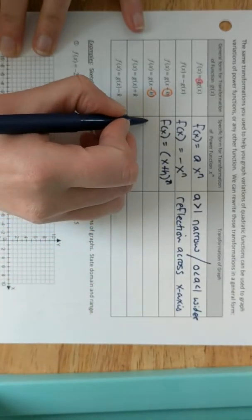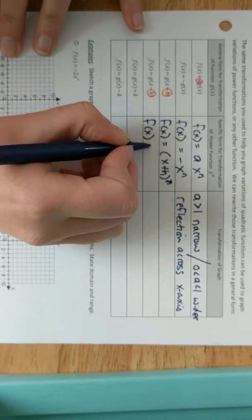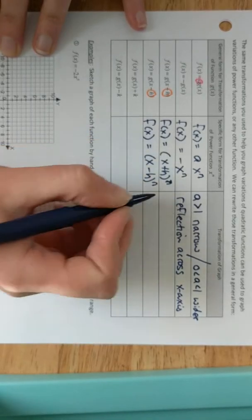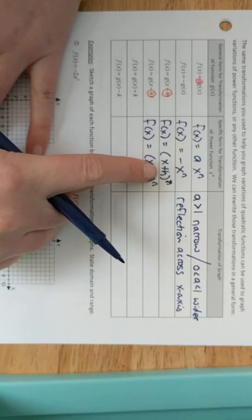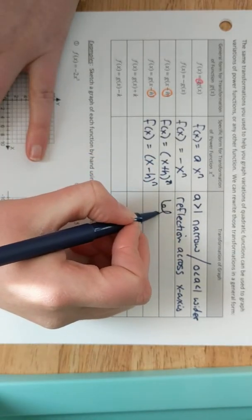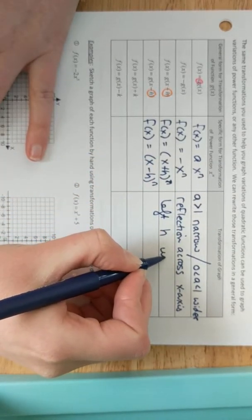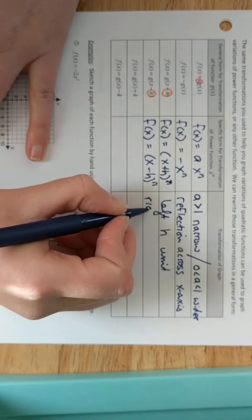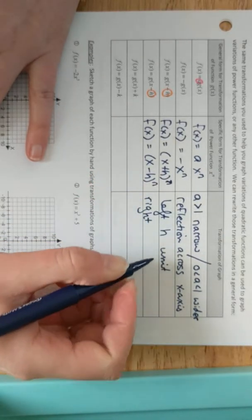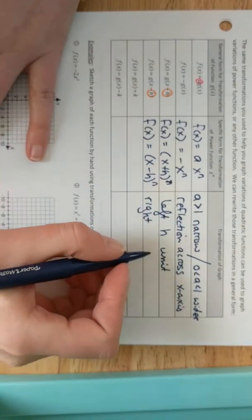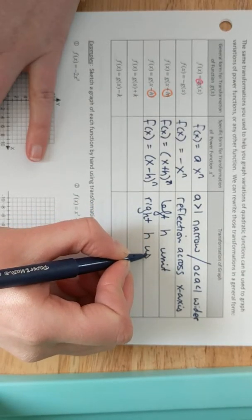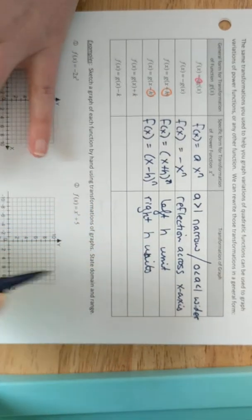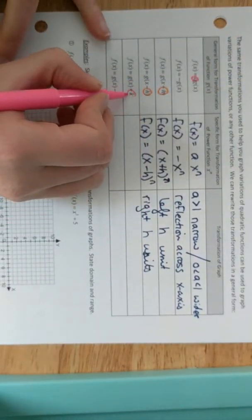Then we have our h and k shifts. And if you remember from quadratics when I had plus h versus minus h, what was the difference on that? It was a left-right, so in terms of the power function, it would look like it's an inside shift. So it's going to be x plus h to the nth power, or if it's a minus shift, it'd be the x minus h to the nth power.